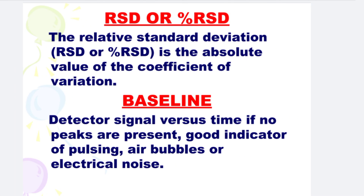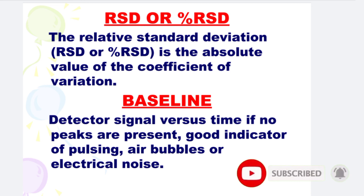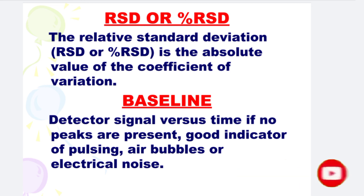Next is RSD or %RSD. The Relative Standard Deviation, RSD or %RSD, is the absolute value of the coefficient of variation. And the last one is Baseline. Baseline is the detector signal versus time when no peaks are present — a good indicator of pulsing, air bubbles, or electrical noise.